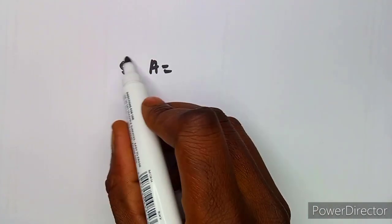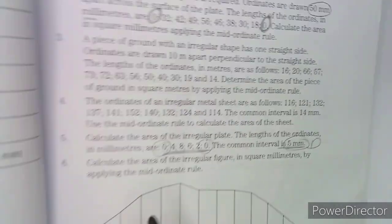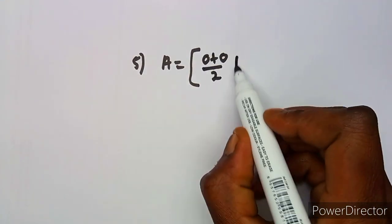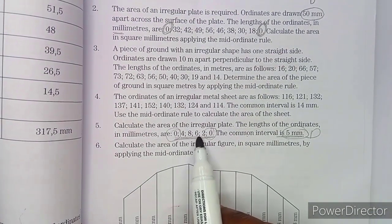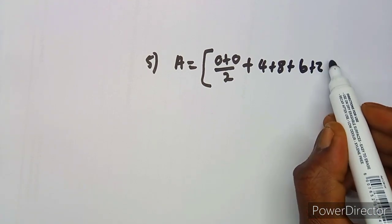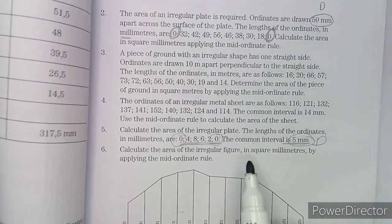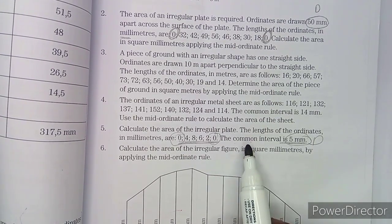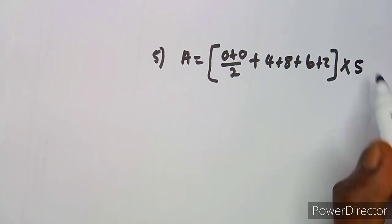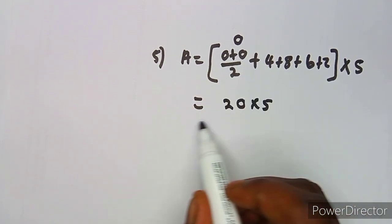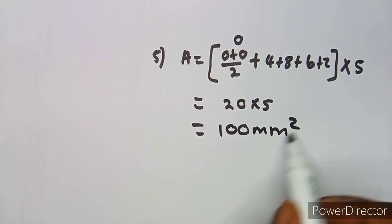For the next example, it is the same thing. The first ordinate and last ordinate are both zero. The remaining ordinates are 4, 6, 8, and 2, so it is 4 plus 6 plus 8 plus 2. The common interval — the distance between ordinates — is 5 millimeters. Zero plus zero over two gives zero. Adding the remaining gives 20, times 5, equals 100 square millimeters.